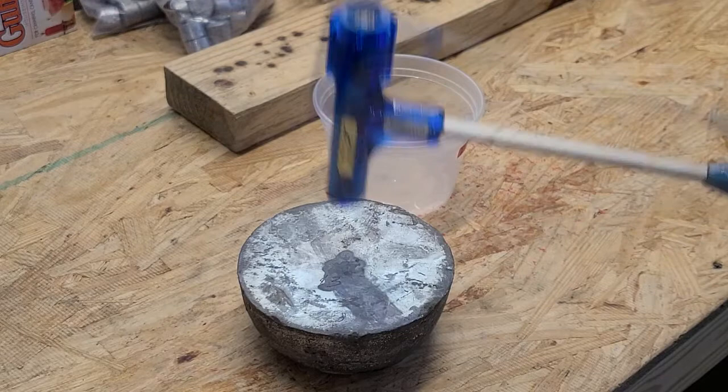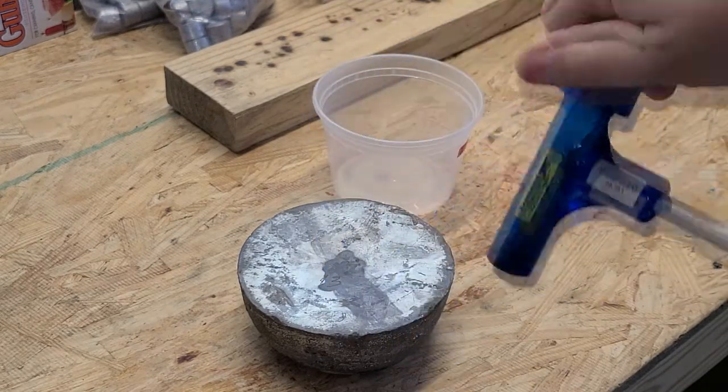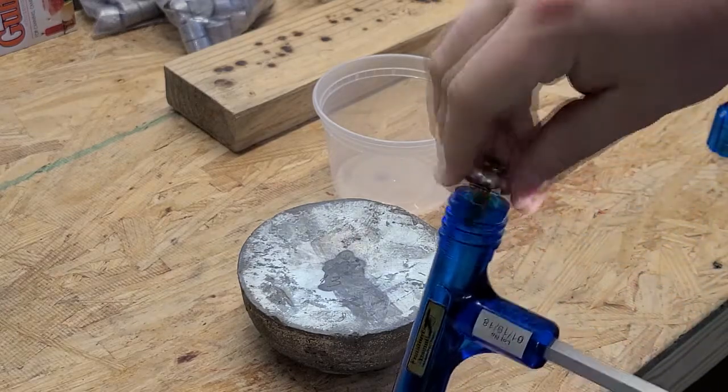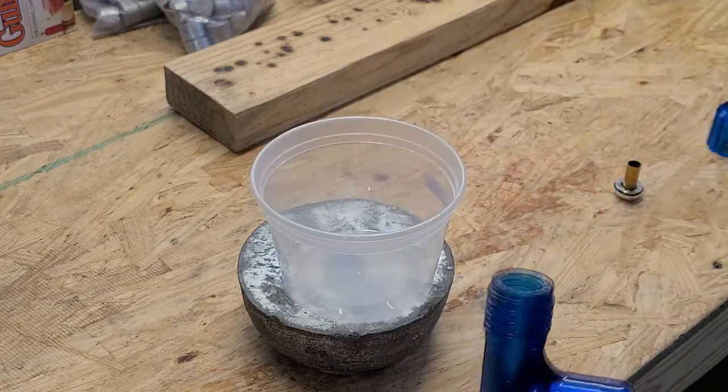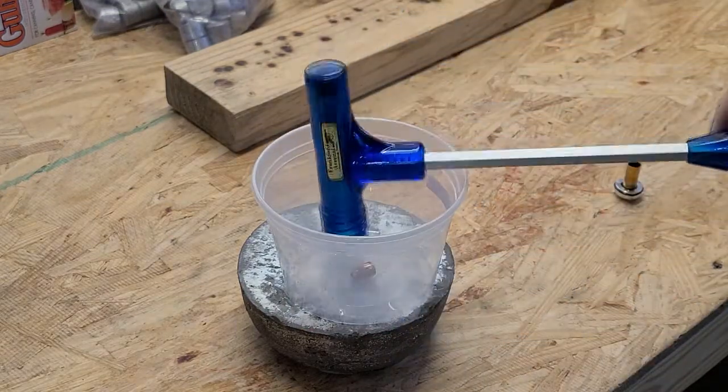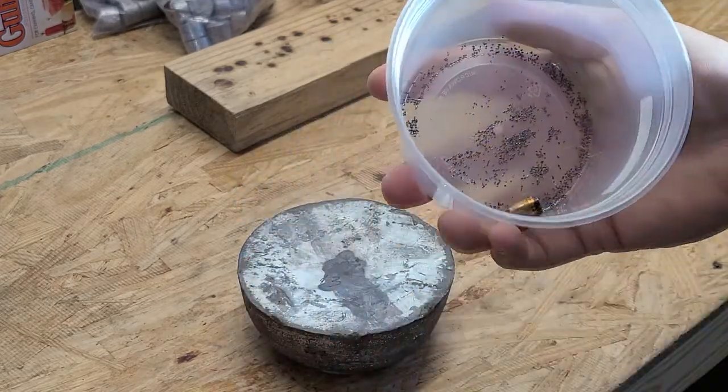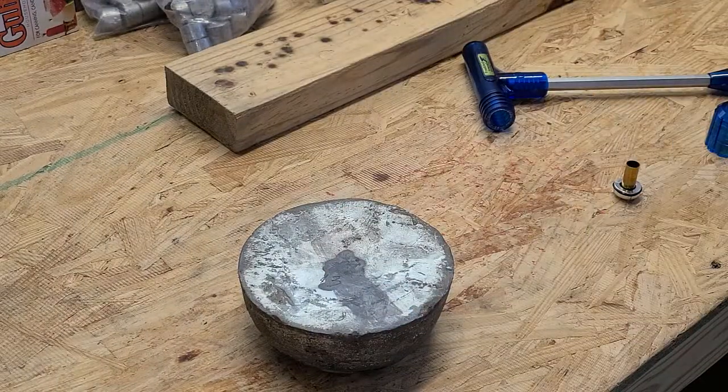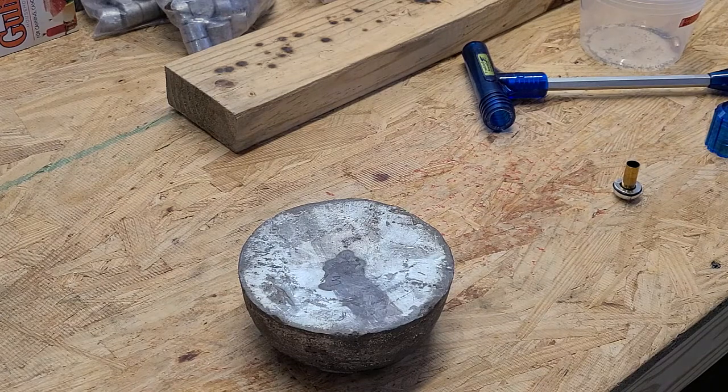You just give it a couple whacks and it falls out. It's got a little rubber plug at the bottom that cushions it. Now you take it all the way off - here's your case, and there's your powder and bullet. This method does less damage to the bullet. The collet sometimes will mar up a jacket.